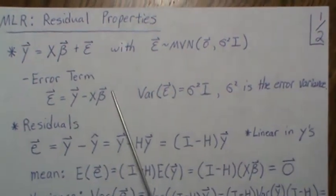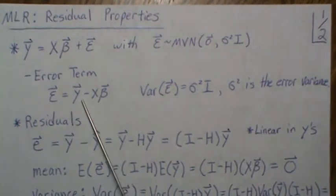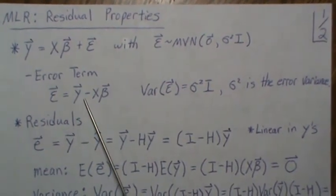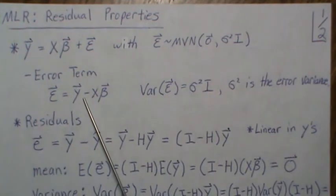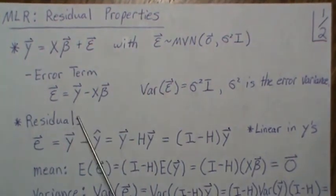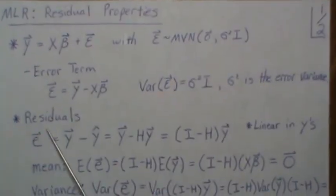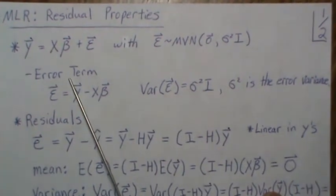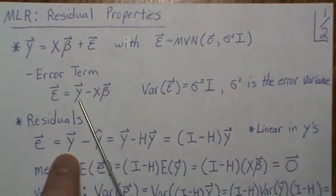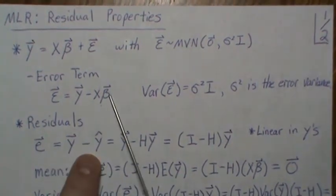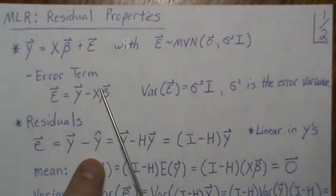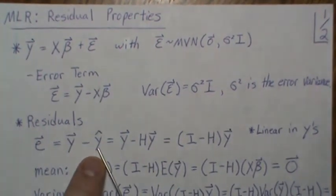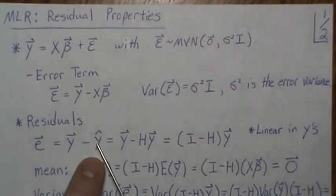So what we do is we estimate it with our sample. And those are called residuals. Residuals are estimates of these error terms. So we have the same y, but instead of using this model we use the least squares model. Now remember, y hat is X times beta hat, and that's the fitted model.